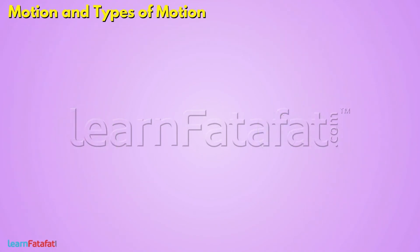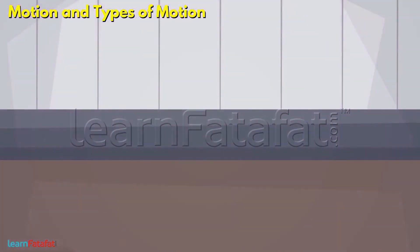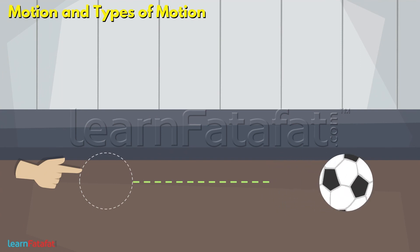Sometimes the motion of an object is a combination of different types of motion. For example, here is a ball. Suppose we push it a little. The ball rotates about itself. In addition to this, it also moves in a straight line.